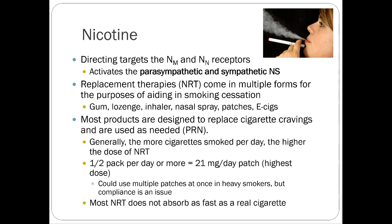Nicotine is a direct nicotinic receptor stimulant, and it really works to stimulate the whole parasympathetic system and also the sympathetic nervous system. It's a direct cholinergic agonist working upstream at those preganglionic targets, which is why you get downstream effects on both systems. This explains the hallmark effects of cigarette smoking — it acts as a stimulant causing vasoconstriction and increased heart rate, while at the same time people feel digestive effects like the urge for a bowel movement. These conflicting effects make sense when you understand the drug works at preganglionic targets.